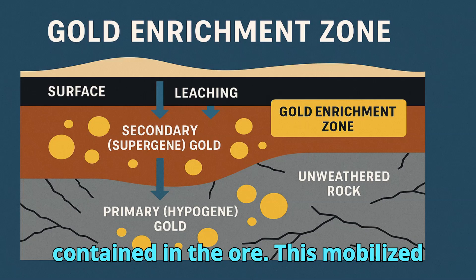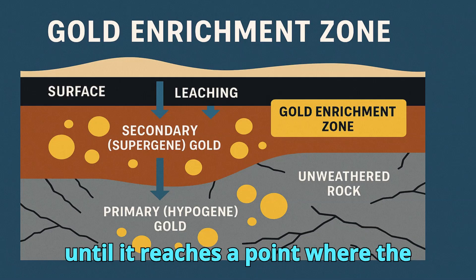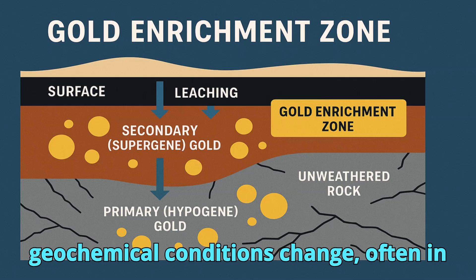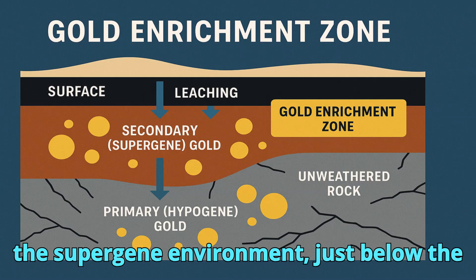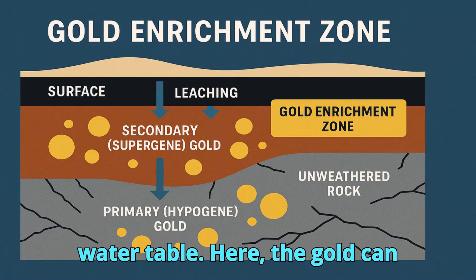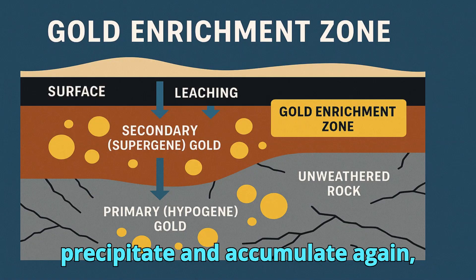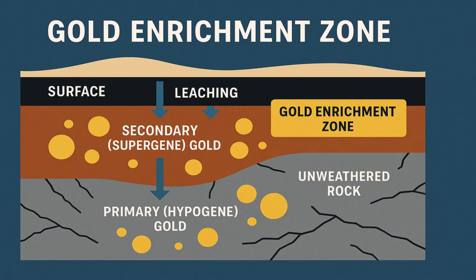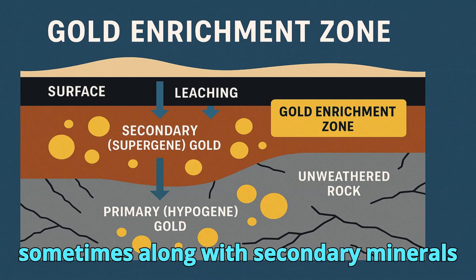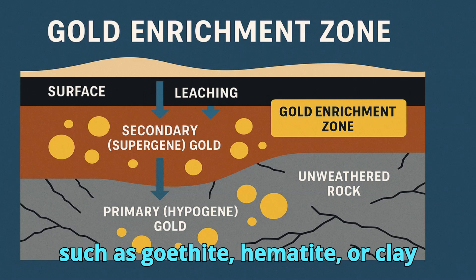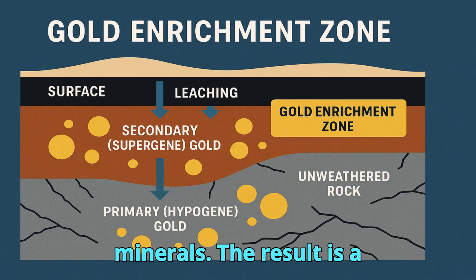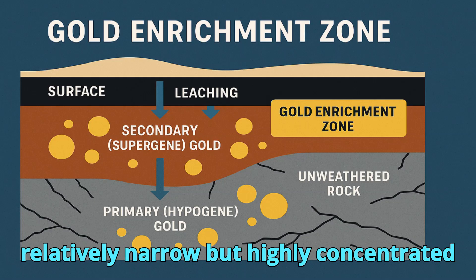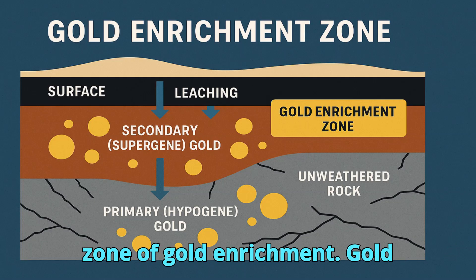This mobilized gold travels downward with the water until it reaches a point where the geochemical conditions change, often in the supergene environment just below the water table. Here, the gold can precipitate and accumulate again, sometimes along with secondary minerals such as goethite, hematite, or clay minerals. The result is a relatively narrow but highly concentrated zone of gold enrichment.